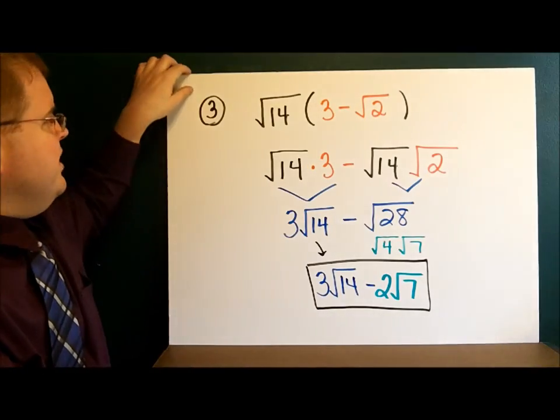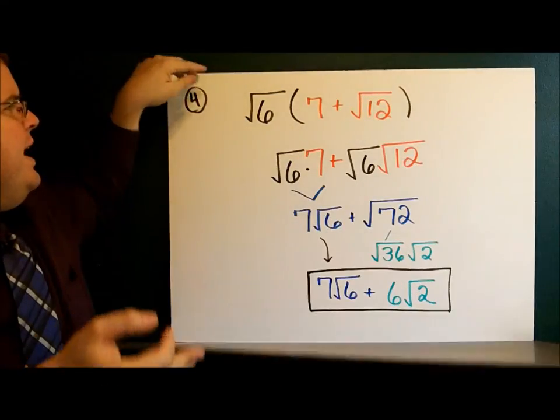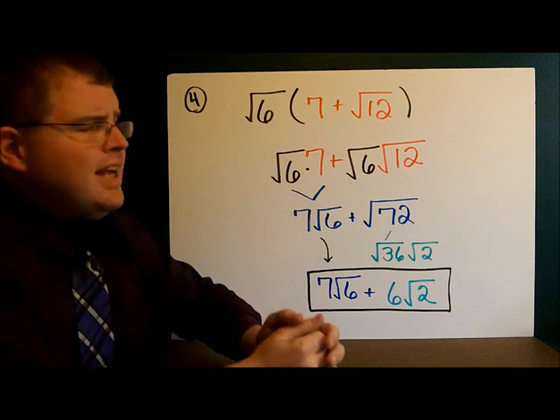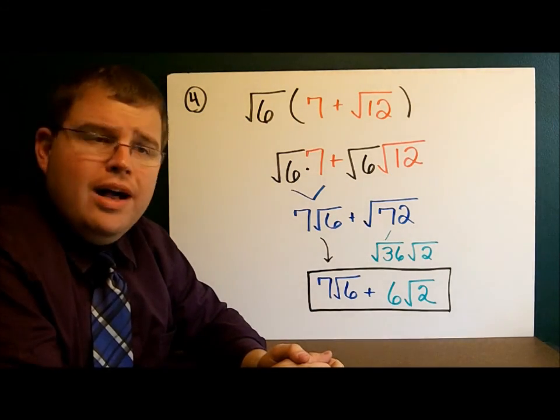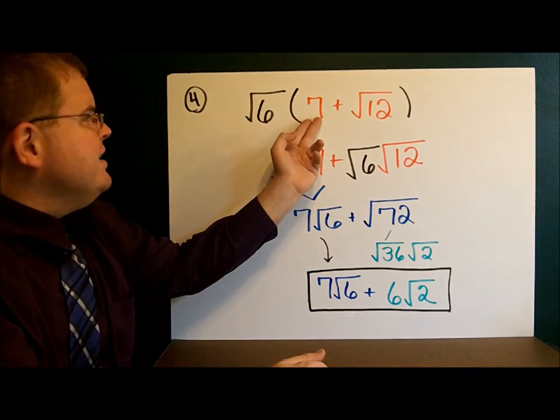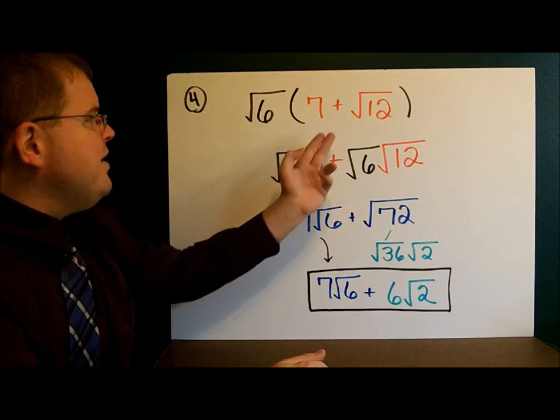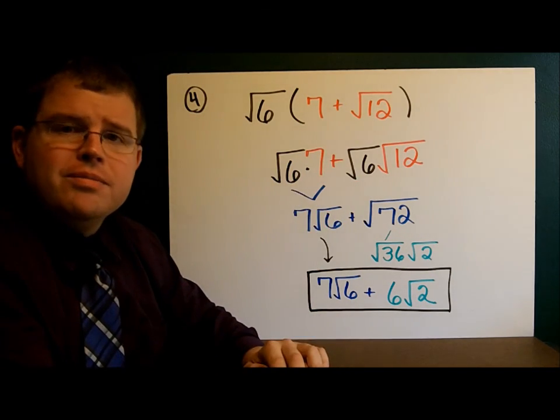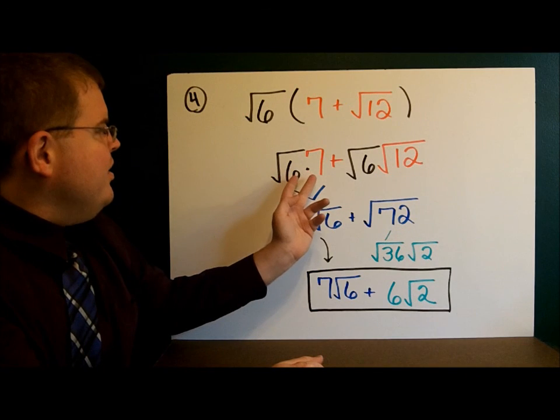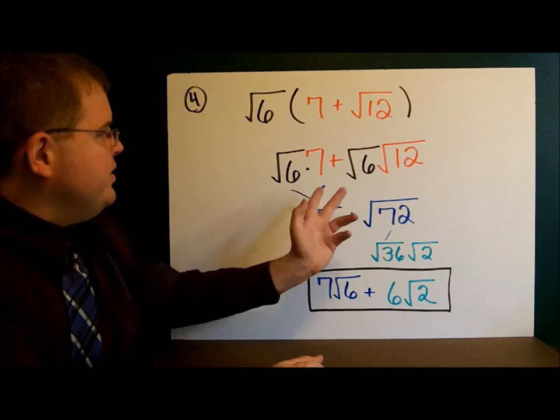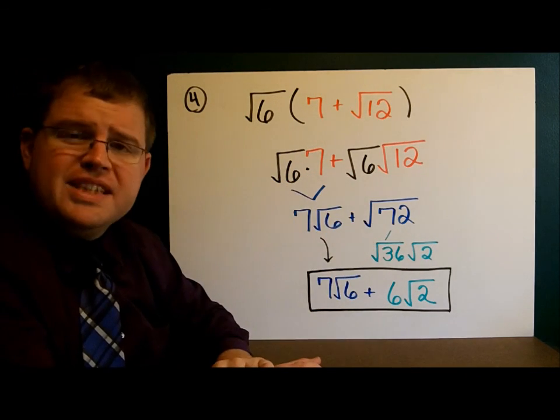Let's take a look at the answer. On example 4, we had the square root of 6 times 7 plus the square root of 12. We distributed square root of 6 times 7, square root of 6 times 12. Now, we have 7 square roots of 6 and the square root of 72.